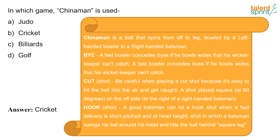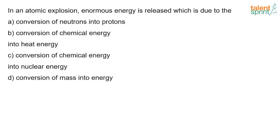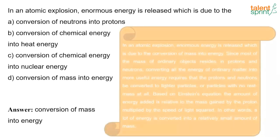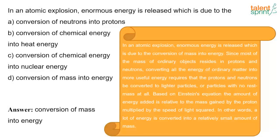In an atomic explosion, the enormous energy released is due to the conversion of mass into energy. Most of the mass of ordinary objects resides in protons and neutrons. Converting all the energy of ordinary matter requires protons and neutrons to be converted to lighter particles or particles with no mass at all. Based on Einstein's equation, the amount of energy is equal to the mass multiplied by the speed of light squared.